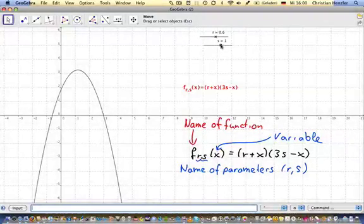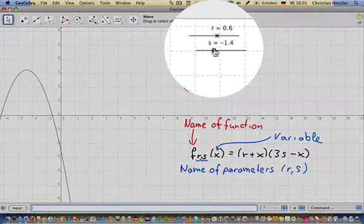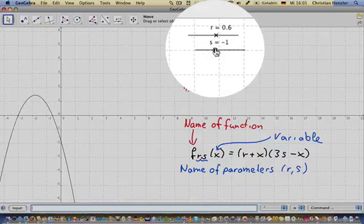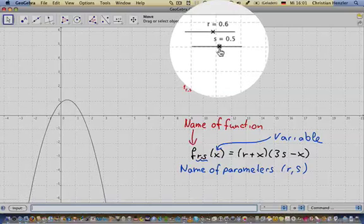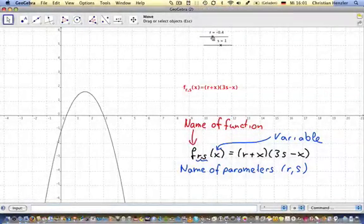If I change the position of the slider, and therefore also my equation of the function, I see my curve is moving. I can also move it here, and I see my curve is moving again.